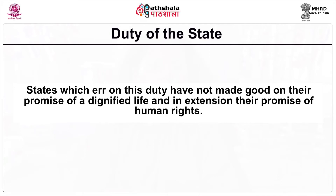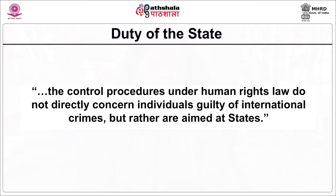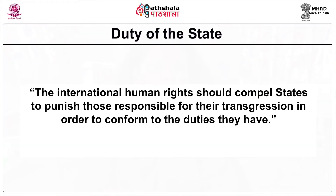States which fail in this duty have not made good on their promise of a dignified life and, by extension, their promise of human rights. The control procedures under human rights law do not directly concern individuals guilty of international crimes, but rather are aimed at states. Therefore, whenever a criminal conduct infringes a human right, international human rights law should compel states to punish those responsible for their transgression, in order to conform to the duties that they have towards their civilians.